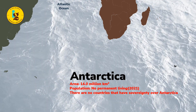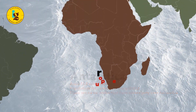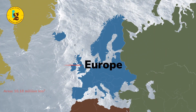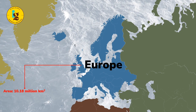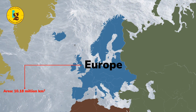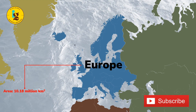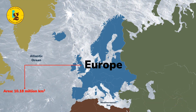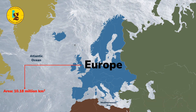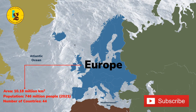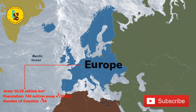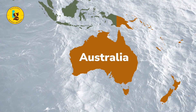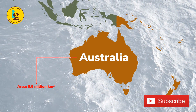Europe is bordered by the Arctic Ocean to the north, the Atlantic Ocean to the west, and the Mediterranean Sea to the south. It has a population of over 746 million people and is home to 244 countries. Australia is the smallest continent on earth, covering approximately 8.6 million square kilometers.